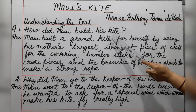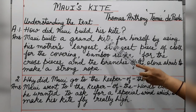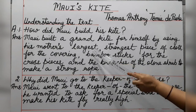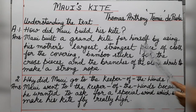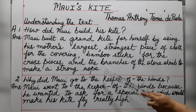Question 1: How did Maui build his kite? Maui used three things to make his kite. He used a cloth given by his mother, bamboo sticks to make the frame of the kite, and the branches of the Olona shrub to make a strong rope. The answer is: Maui built a grand kite for himself by using his mother's largest, strongest piece of cloth for the covering, bamboo sticks for the cross pieces, and the branches of the Olona shrub to make a strong rope.